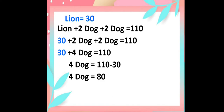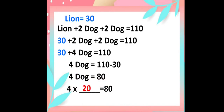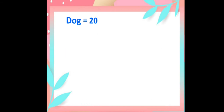Now you can think: by what number should I multiply 4 to get 80? That is 20. So one dog has the value 20. Now we have the value of dog, that is 20.